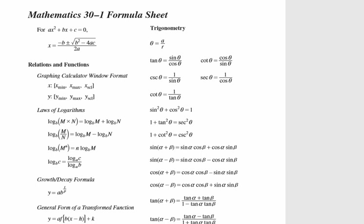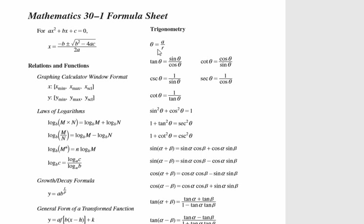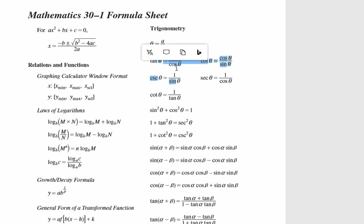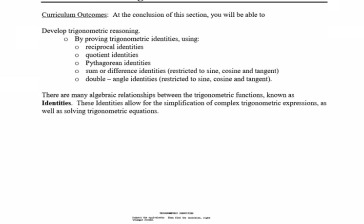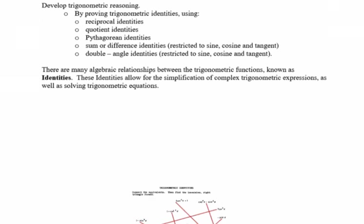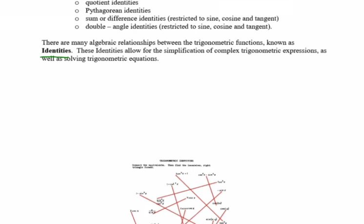I just want to show you the formula sheet again. You've got a lot of formulas on it. So far we've only really done this one for trigonometry — and a little bit of cosecant and stuff. But now what we're going to be getting into is all this other mess down here. There are all these other ones, so we'll get into that.